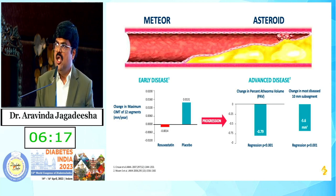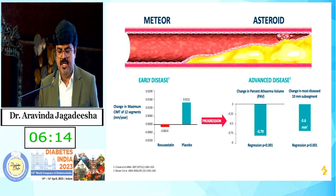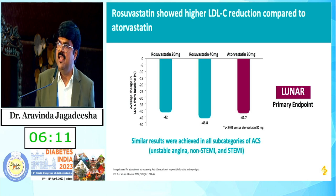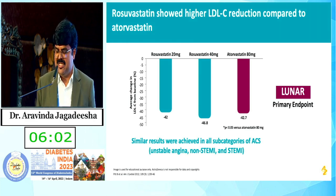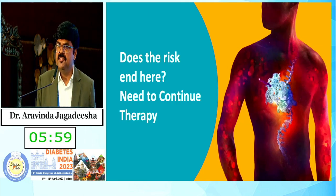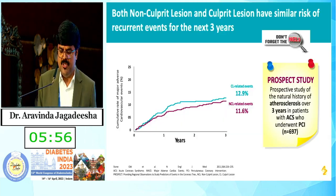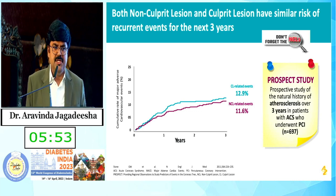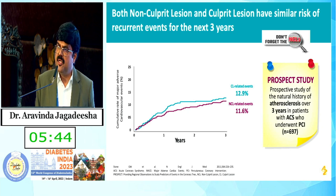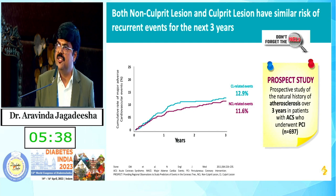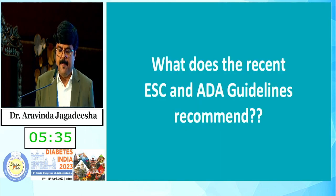Studies like REVERSAL and ASTEROID — both in early and advanced disease — showed that rosuvastatin provides greater benefit. The LUNAR study also showed higher LDL-C reduction compared to atorvastatin. Does the risk end here? No — the PROSPECT study showed that both the non-culprit and culprit regions have similar risk of recurrent events over the next three years in patients with ACS who underwent PCI, underlining the need to continue therapy.